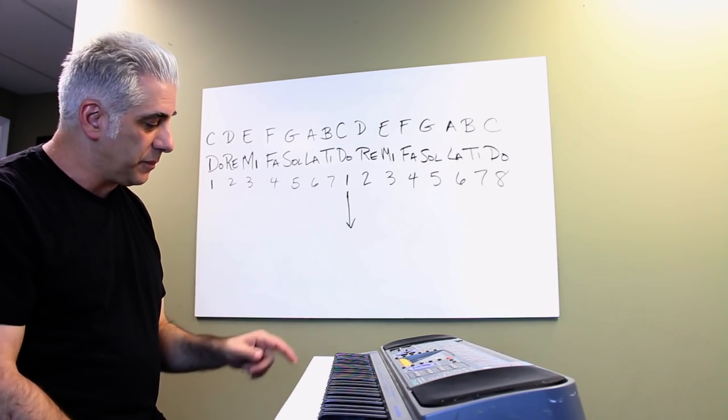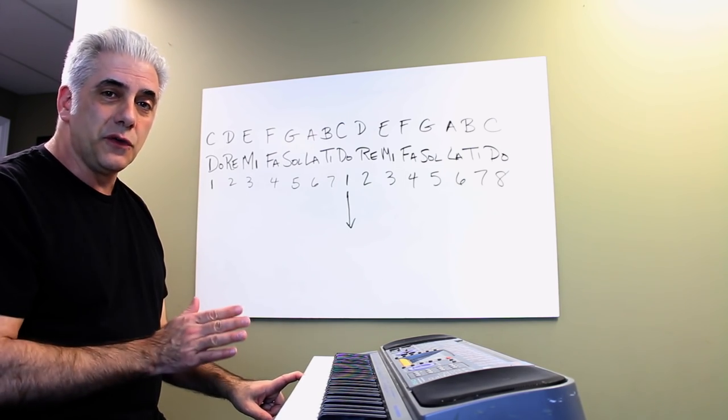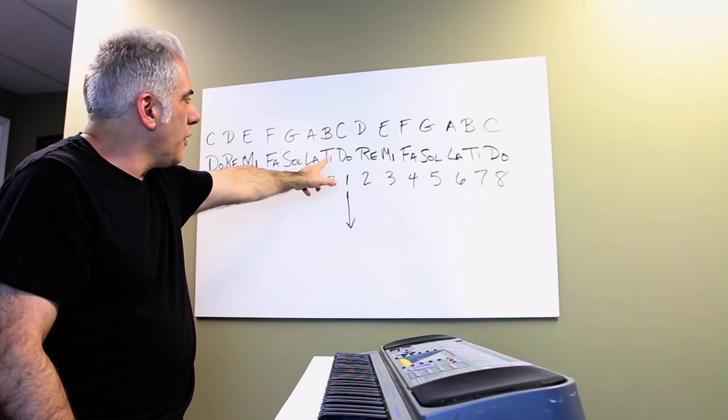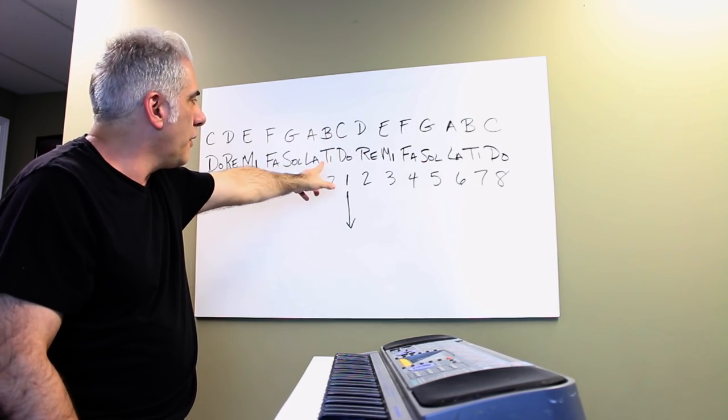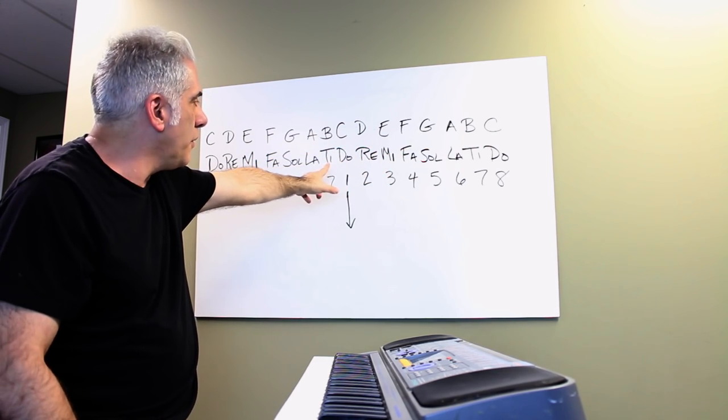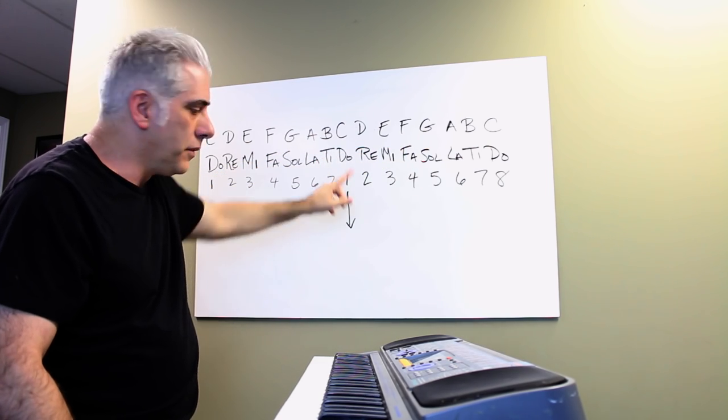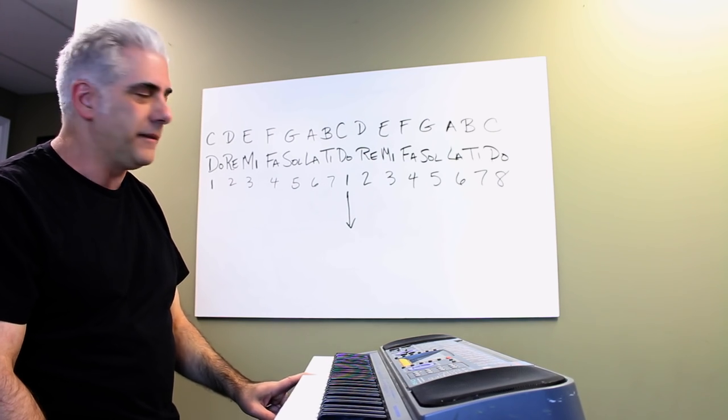The second part of this exercise is play your note C or do and you're gonna just do it without the keyboard. You're gonna go like this. Do, re, do. Do, mi, do. Do, fa, do. Do, sol, do. Do, la, do. Do, ti, do. Do, do, do. Then I want you to check the note again after and make sure you have not drifted.